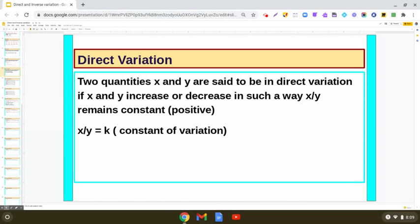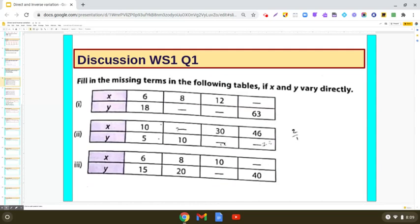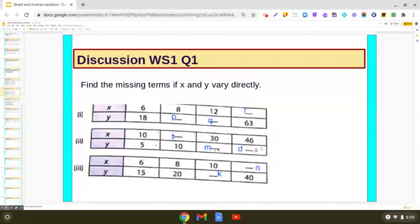So here we are going to use this mathematical relationship that it is given that two quantities are in direct variation. So let us solve this question. We have taken here p, q,